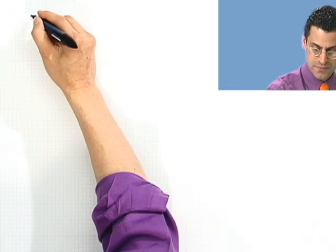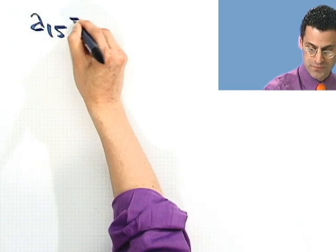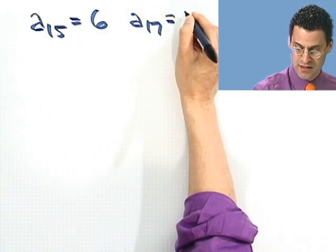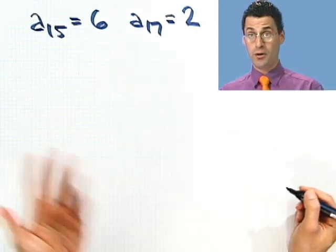What if I give you just two random terms? I tell you I'm thinking of an arithmetical sequence, and let's suppose that the 15th term is 6 and the 17th term is 2. How can I find out a formula for the sequence in general? I tell you it's arithmetic.